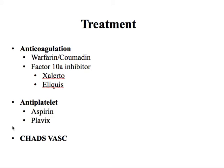If rhythm control doesn't work and they're going to be in AFib chronically, then we need to treat them with anticoagulation therapy. The most commonly used medication is warfarin — also called Coumadin, brand name versus generic. Warfarin works on the vitamin K dependent coagulation factors and will cause the patient to decrease activation of the coagulation cascade, including protein C and protein S, decreasing the chance of clots being formed.